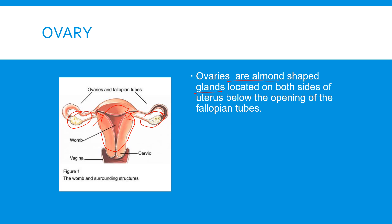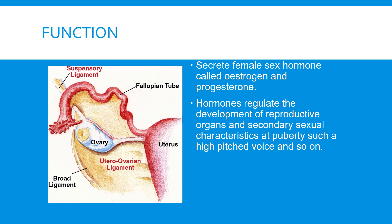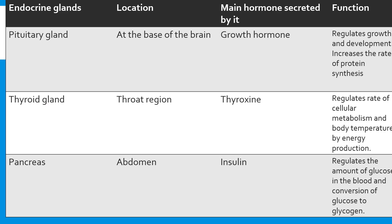Now we will move on to a summary chart. I have put together a gist of all the endocrine glands — their location, their main hormone secreted, and their functions. This chart makes it easy to memorize everything. If you refer to the previous part, you can also see the diagrams showing the exact location of each gland.